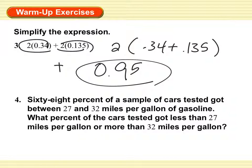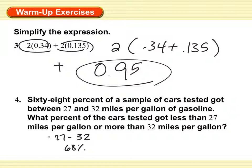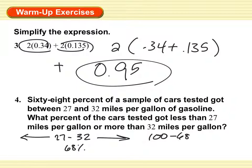68% of sample cars tested got between 27 and 32 miles per gallon of gasoline. What percent of cars tested got less than 27 miles per gallon or more than 32 miles per gallon? So if we have between 27 and 32 miles per gallon at 68%, everything less than 27 or greater than 32 is the remaining percent. So 100 minus 68 equals 32% for the remaining.